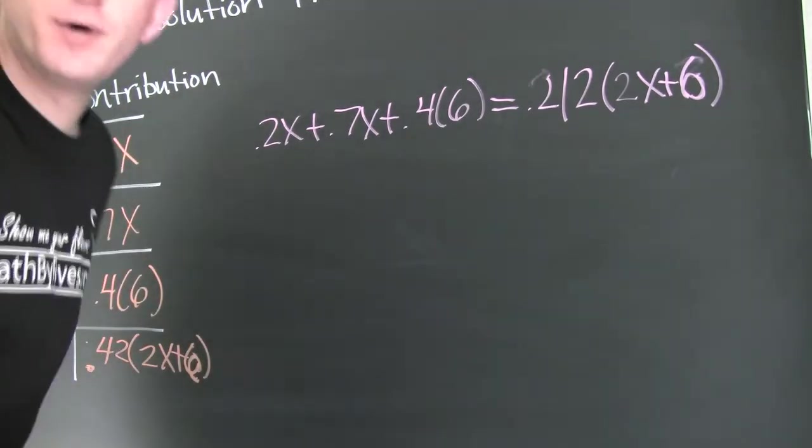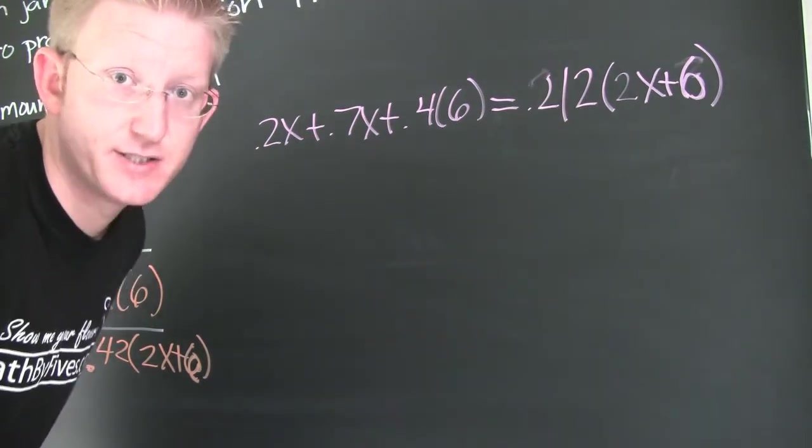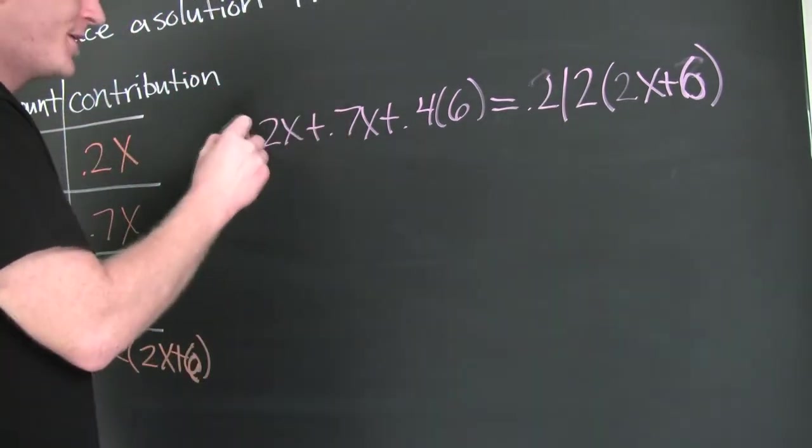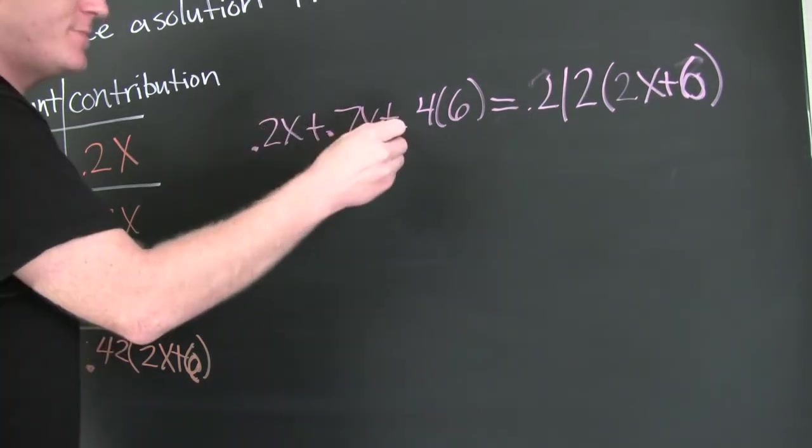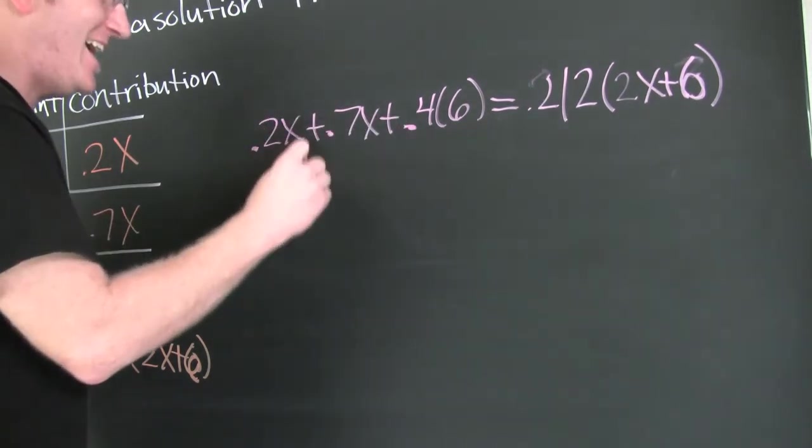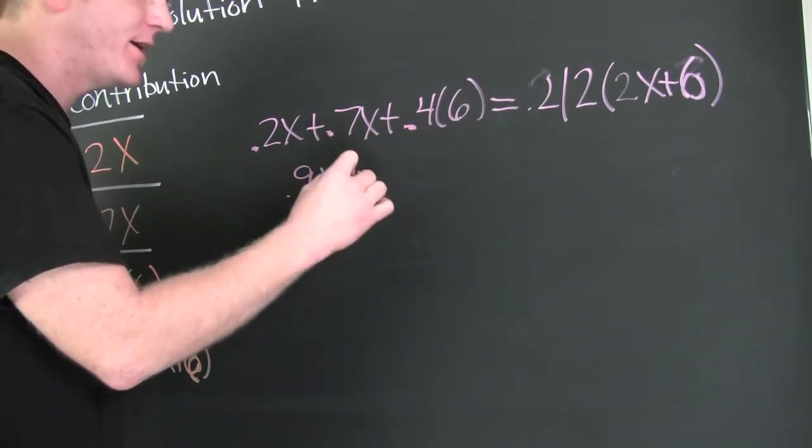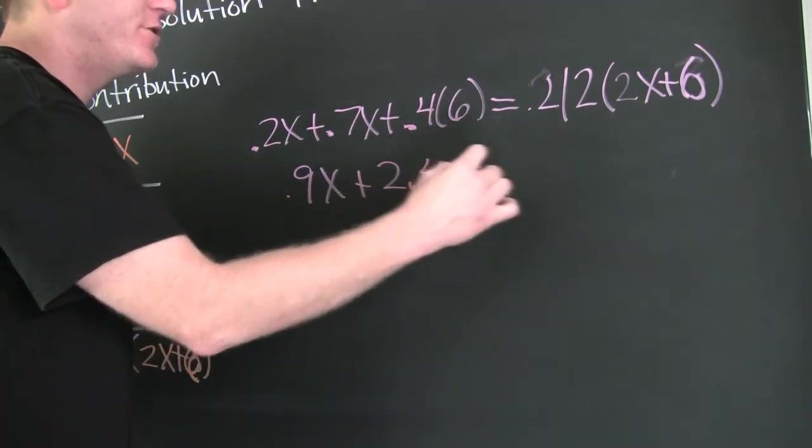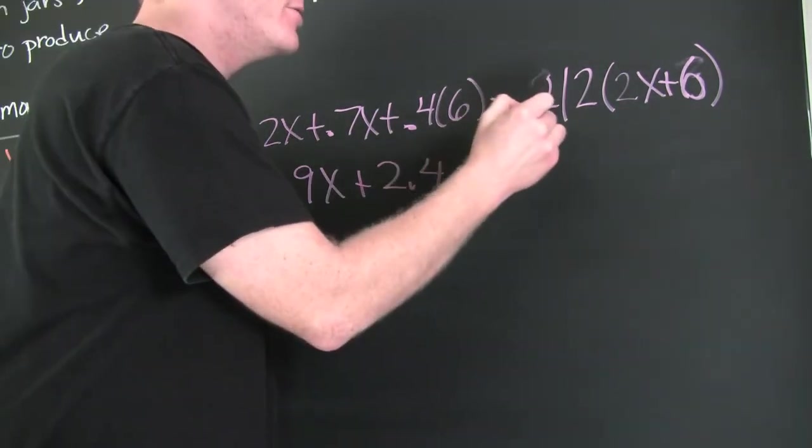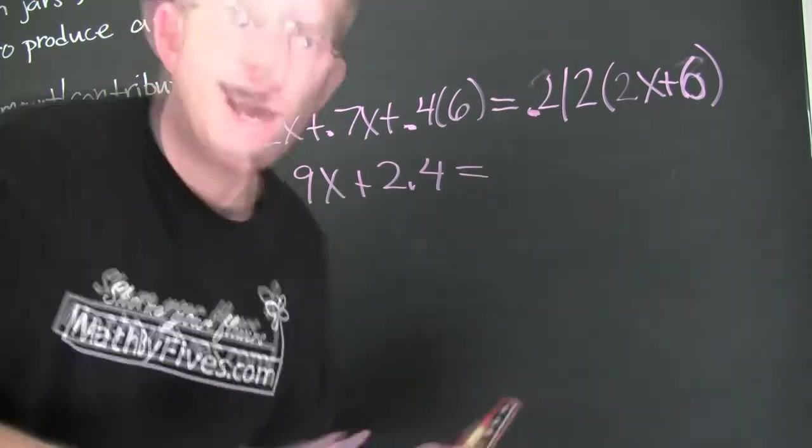Let's go and gather, collect, and combine and simplify these expressions algebraically. 0.2 and 0.7, I think, on a good day, that gives me 0.9X. And then 4 times 6 is 24. Then I move the decimal, so that's plus 2.4.